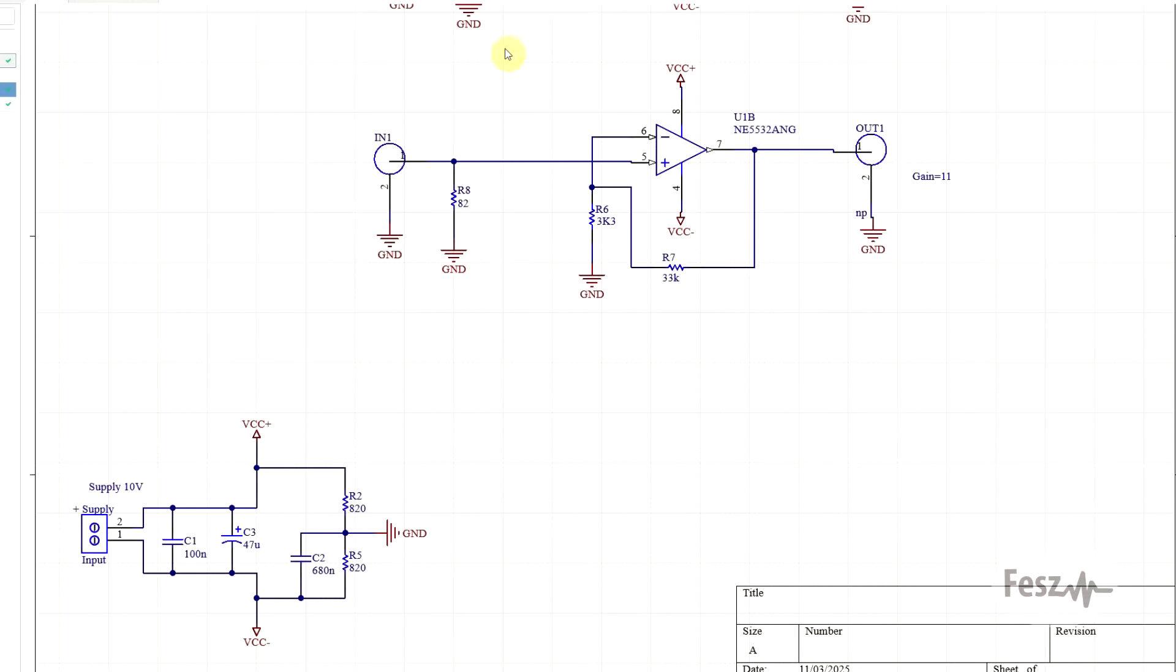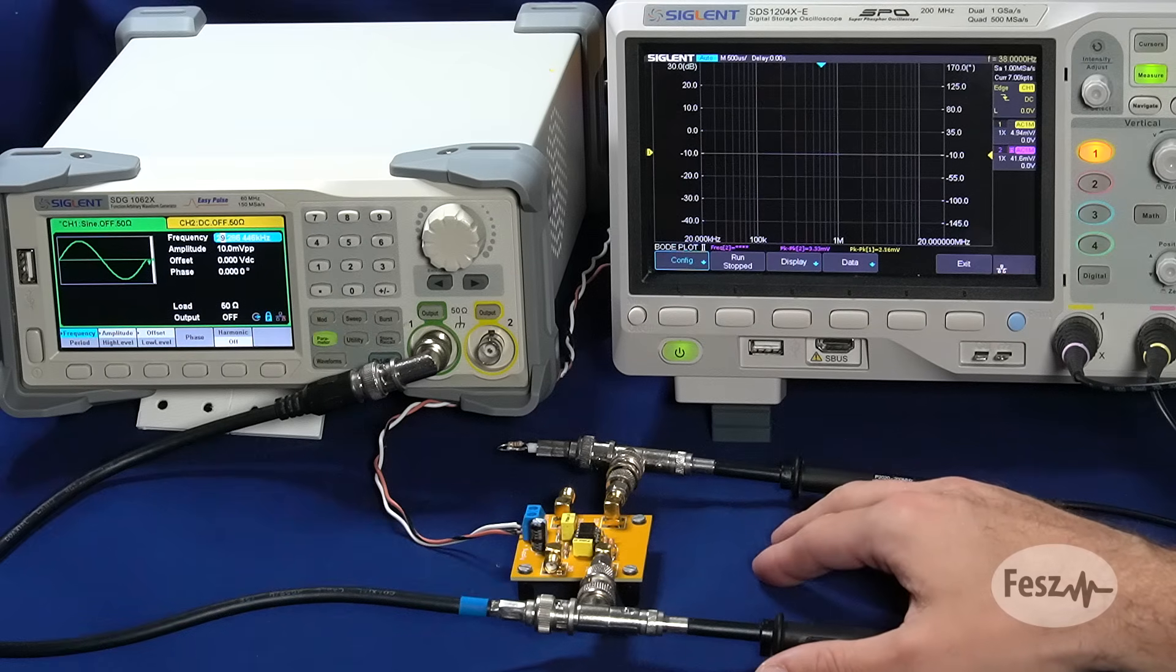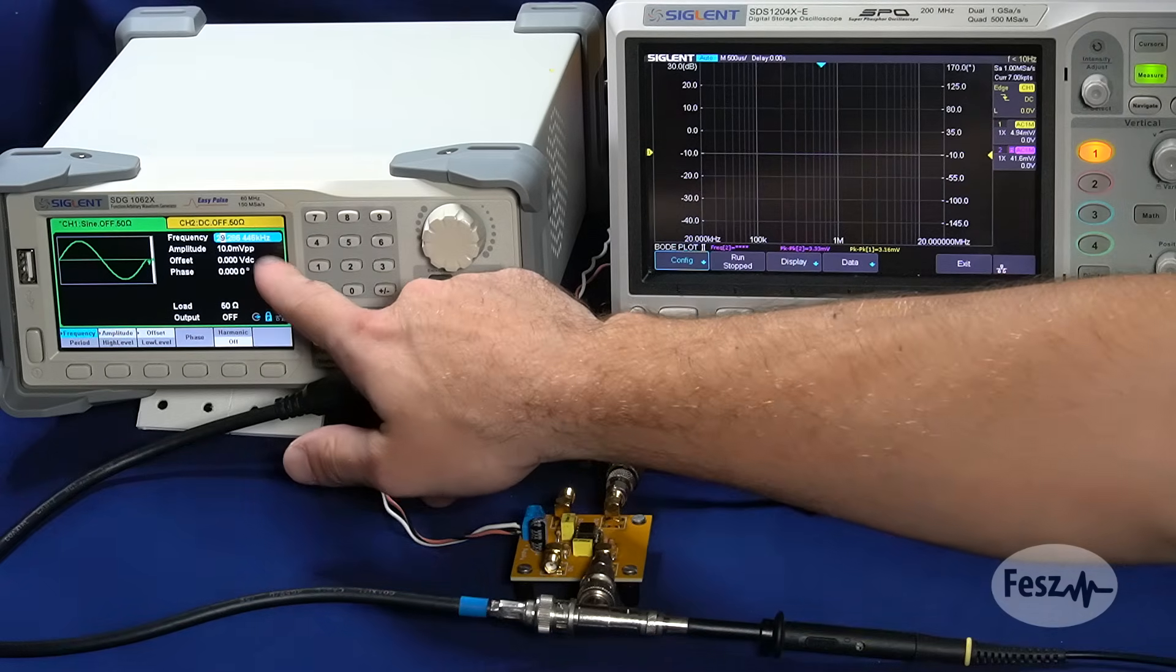So the test circuit is a 5532 op-amp based amplifier that has a gain of 11. And the test signal that is being used has an amplitude of 10mV.